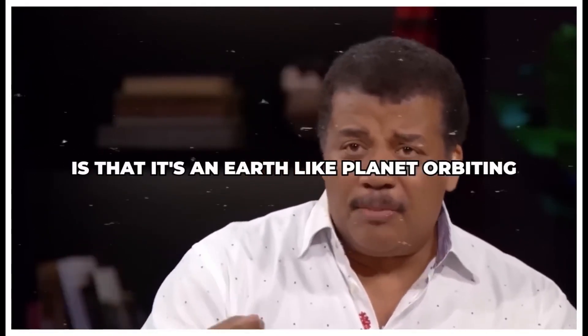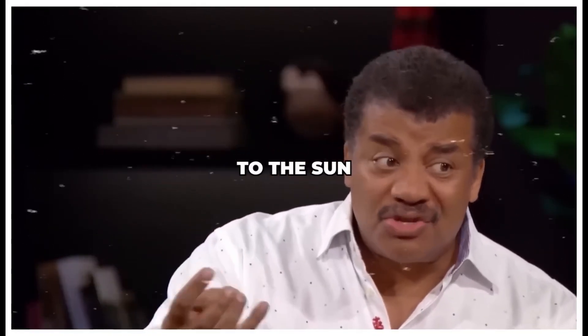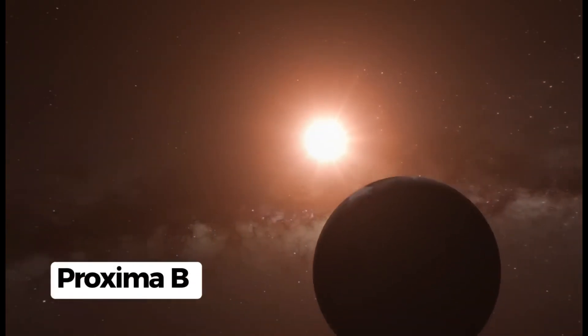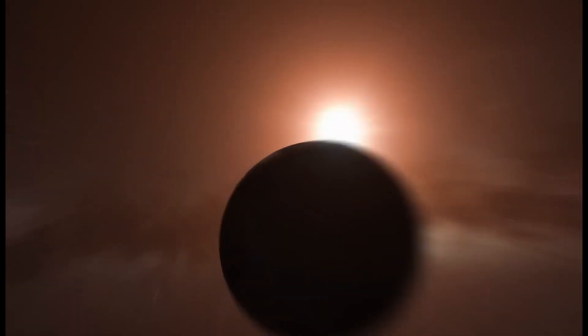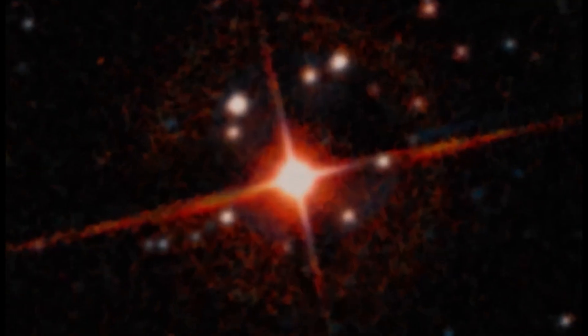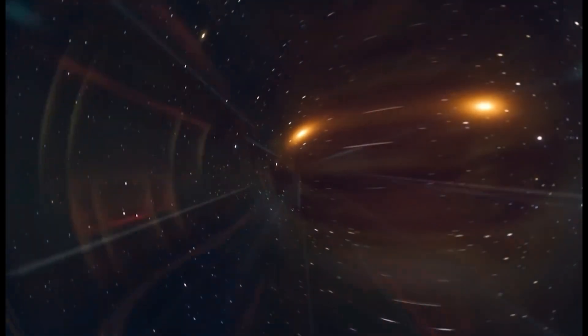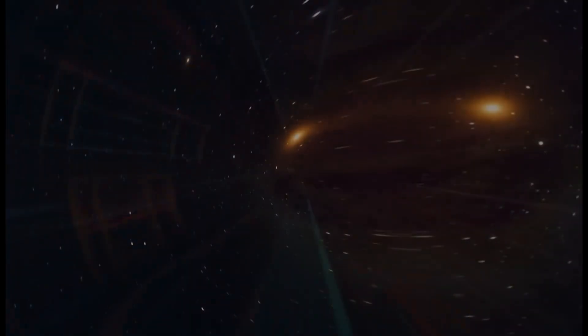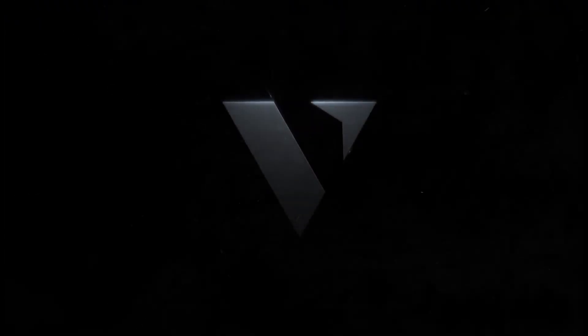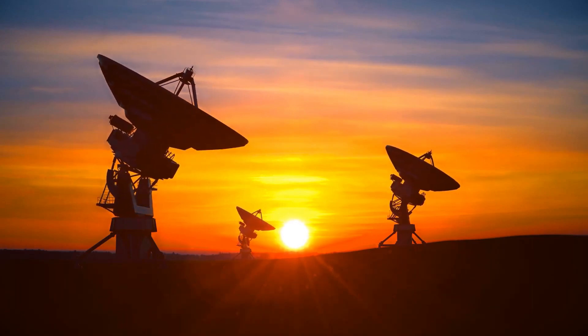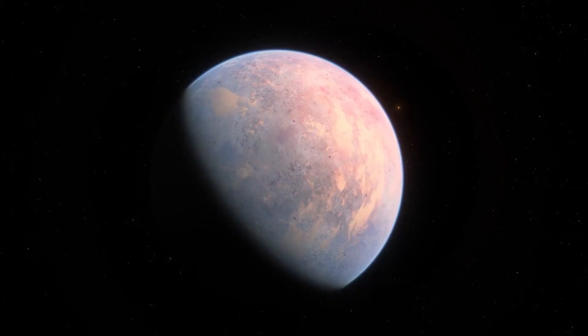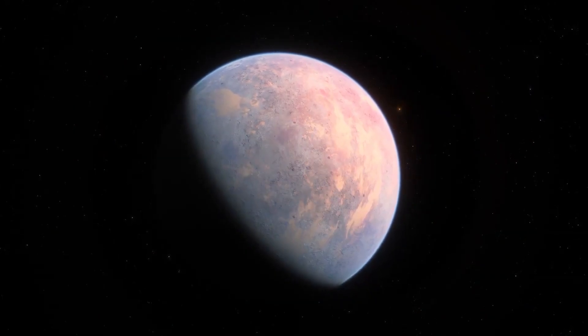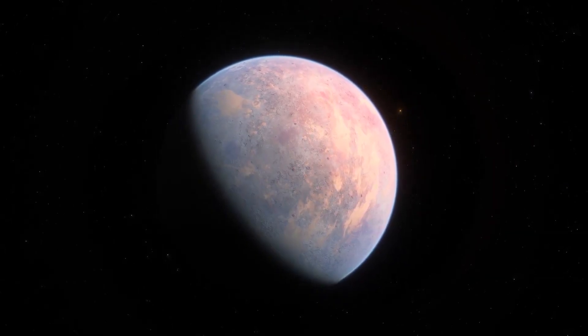Proxima B orbits its star just as Earth orbits the sun, though the star is dimmer and smaller. Tidal locking means one side of Proxima B always faces its star, while the opposite side remains in perpetual darkness. Unknowns remain about Proxima B's atmosphere, including if it contains clouds, water, or carbon dioxide, elements fundamental for life.